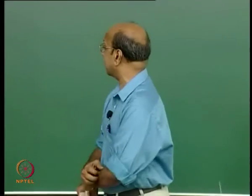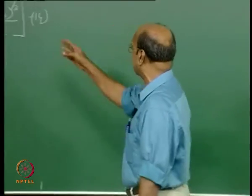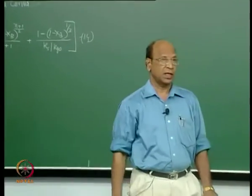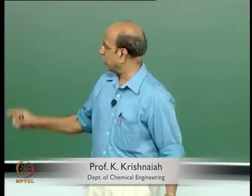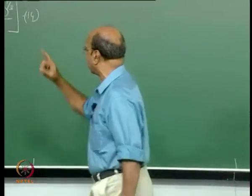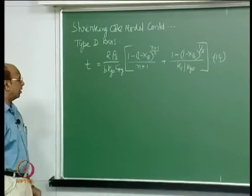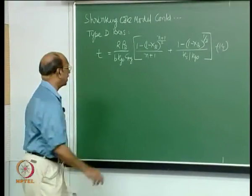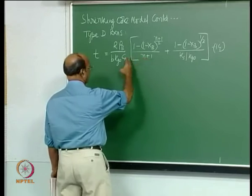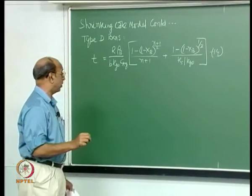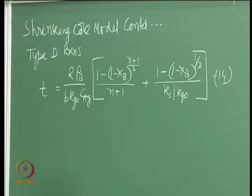Yesterday we were discussing this particular equation for Type D reactions where there is no ash or solid product on the particle. We derived this equation for the time required for a certain conversion. If both mass transfer through the film and reaction on the surface are controlling, then this is the equation.